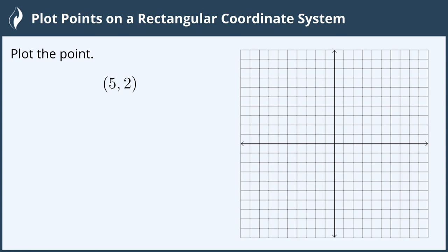Plot the point (5, 2). The rectangular coordinate system has two axes. The horizontal axis is the x-axis and the vertical axis is the y-axis.